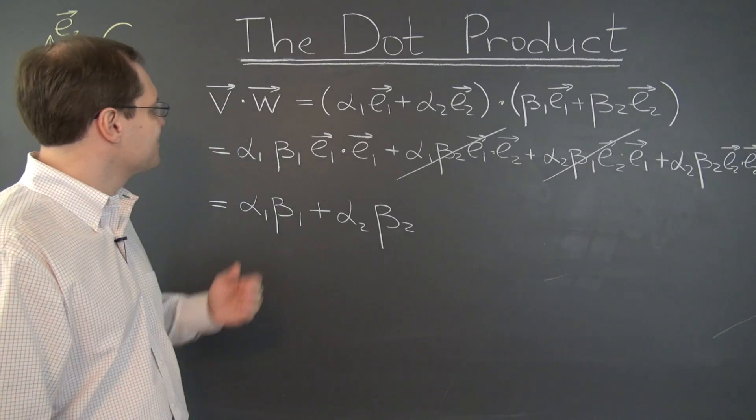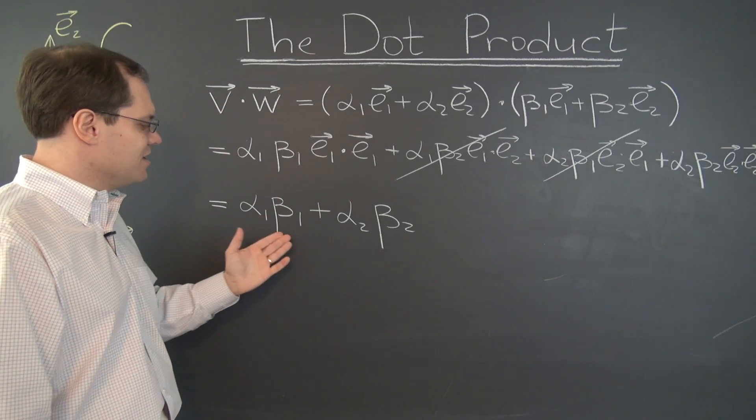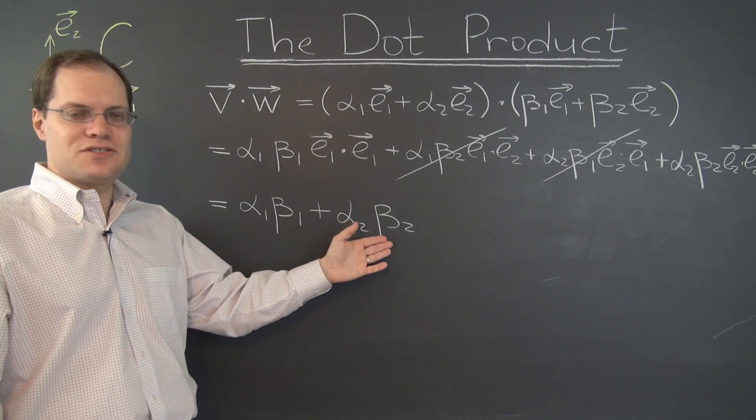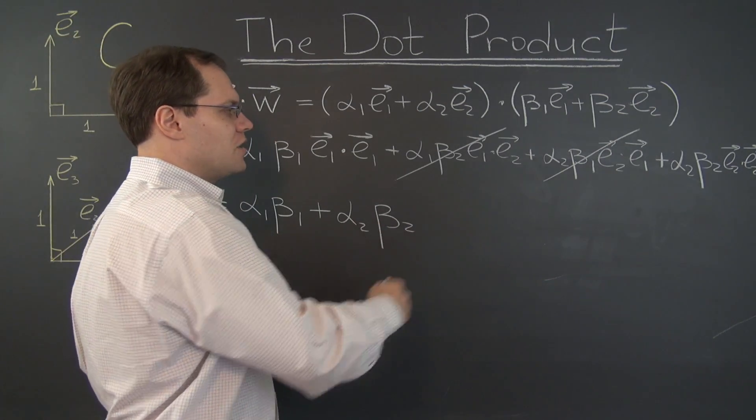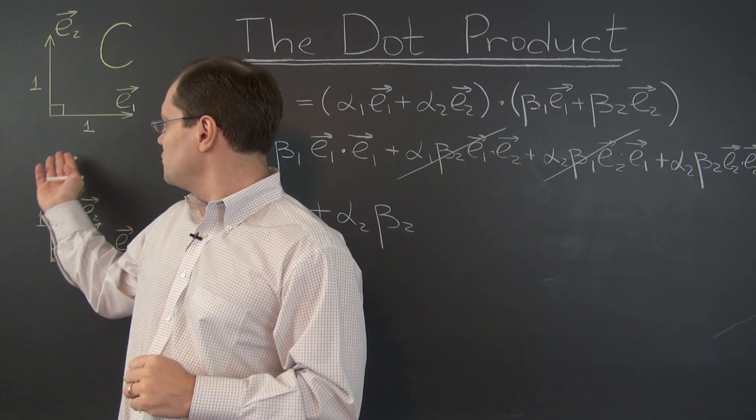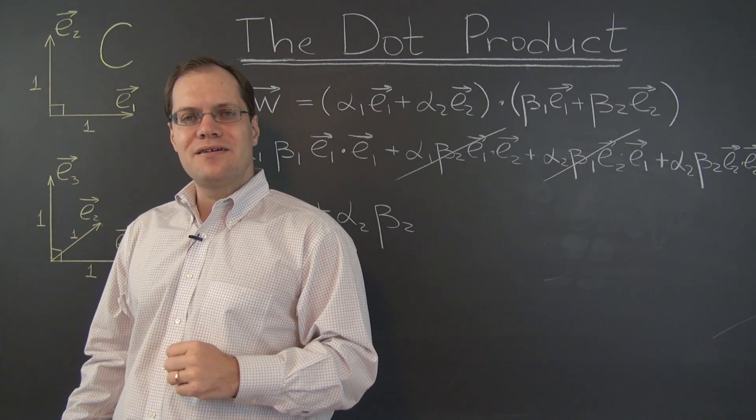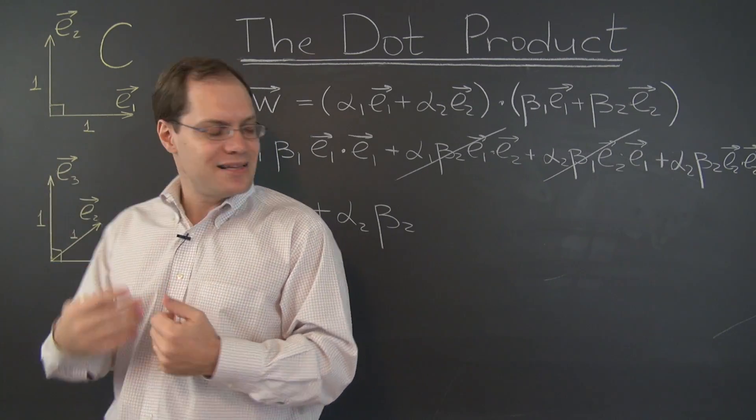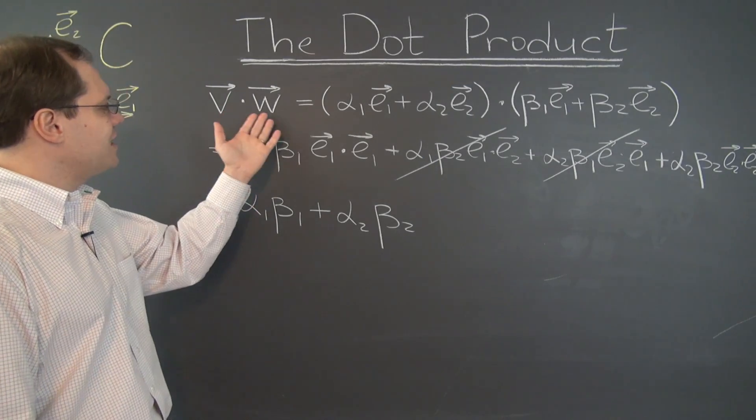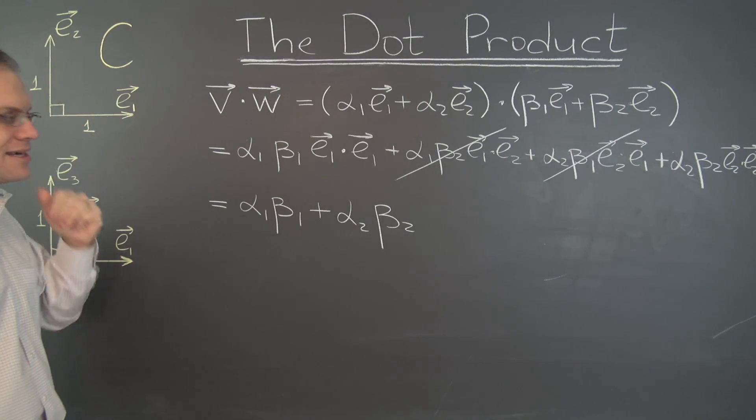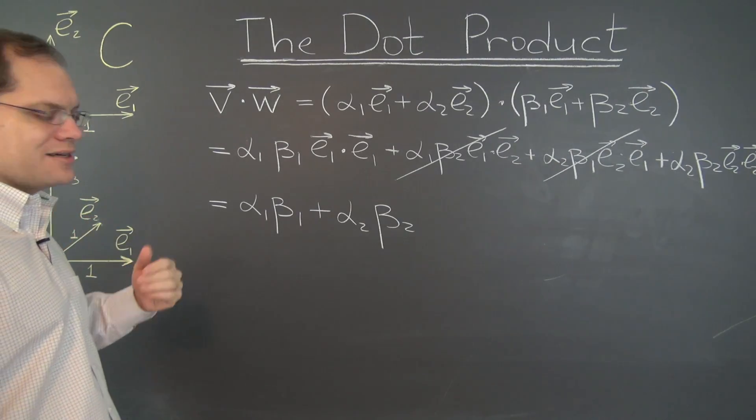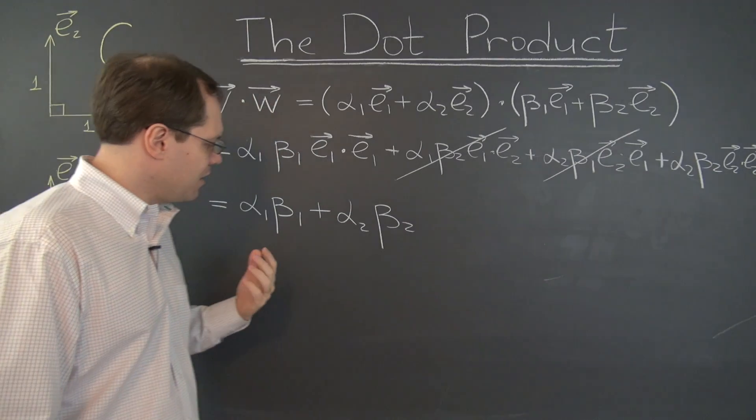How easy was that? There you go. V dotted with W is alpha 1 beta 1 plus alpha 2 beta 2. Pure algebra, no trig, no geometry. We barely used the definition of the dot product, which is length times angles. Right? But we didn't have to deal with complicated length and angles. Only trivial lengths and angles. So it's really a magical proof. Okay?